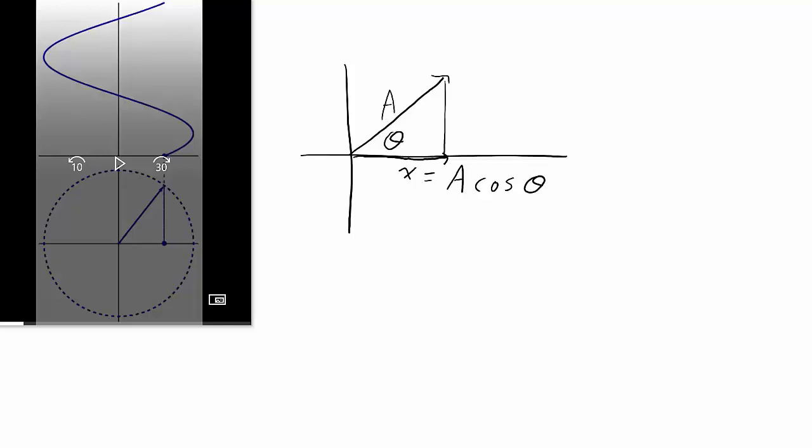And again, theta is changing at a rate of omega radians per second. So the value of theta at any point in time is going to be equal to that angular velocity omega times time. So x can be written out in terms of time. X of t is going to be equal to a times the cosine of omega t.